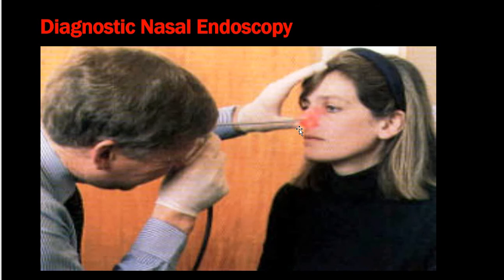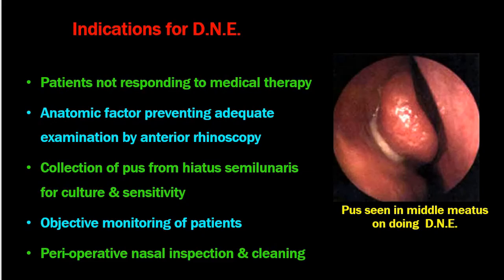On DNE you can see whether pus is anteriorly or posteriorly located, inspect different meatal areas, and examine up to the nasopharynx. Indications for DNE include patients not responding to medical therapy, anatomical factors preventing examination by antroscopy, collection of pus from the middle meatus for culture, objective monitoring of patient progress with medical treatment or surgery, and perioperative inspection and cleaning.